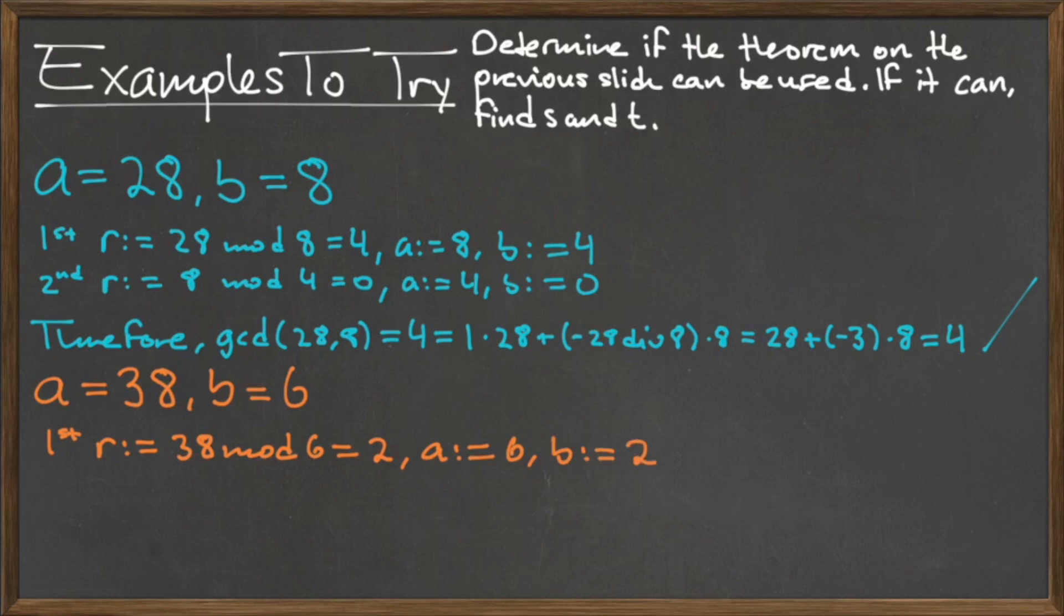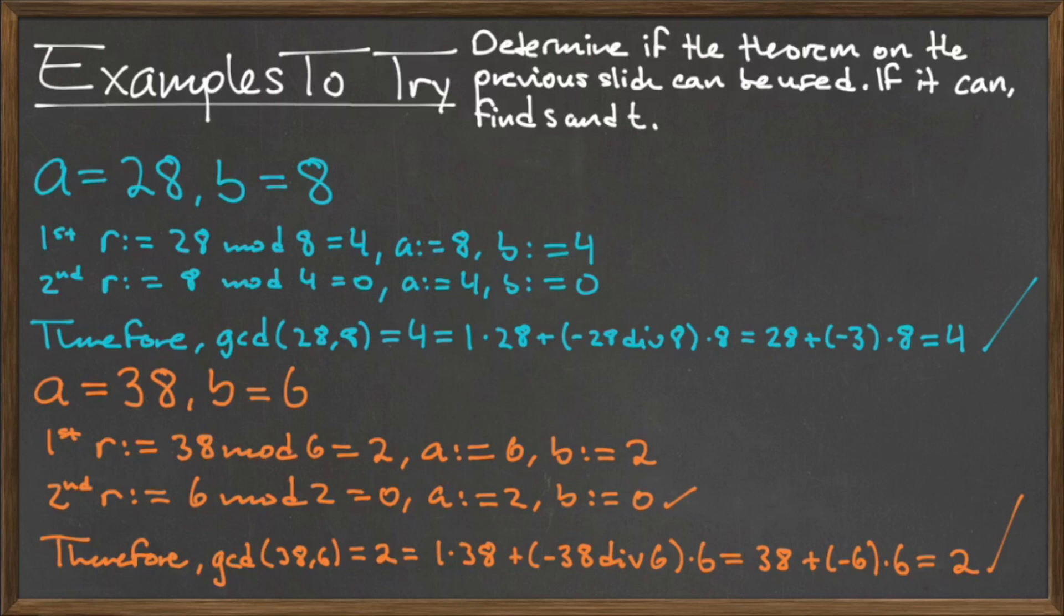For the second example, the gcd of 38 and 6 is equal to 2, and the cofactors are s equals 1 and t equals negative 6. Thanks.